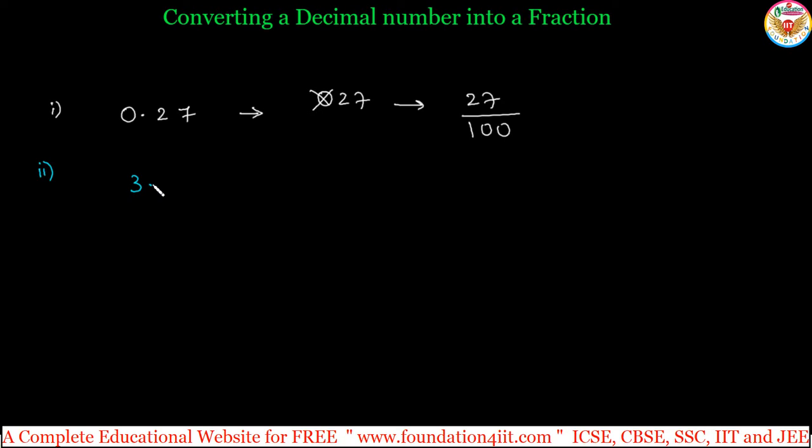Another example, like 3.64. We can write this by removing the decimal point. So 3, 6, 4, just keep it divided by 1. After the point, 1, 2 - two decimal places. So we can keep two zeros. So 364 by 100.